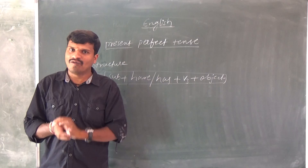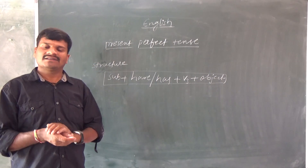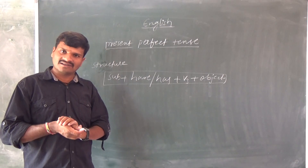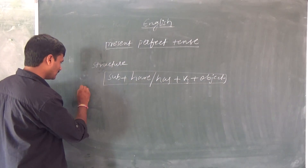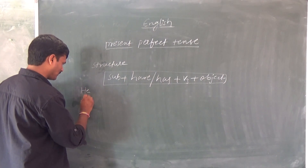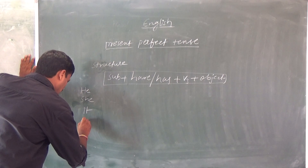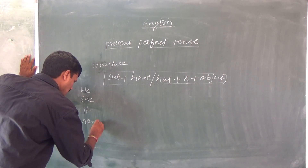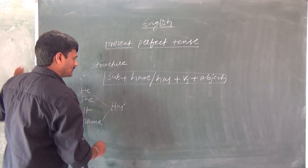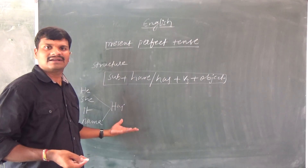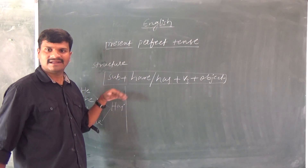Keep one note in mind: third person singular number. If the subject is third person singular number — that is he, she, it, or a name — then 'has' will come. For all the rest, 'have' will come.